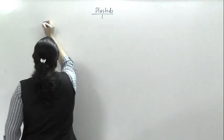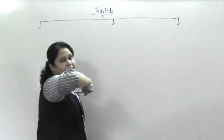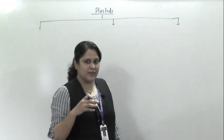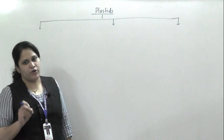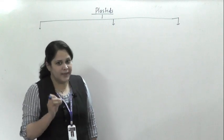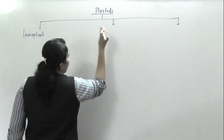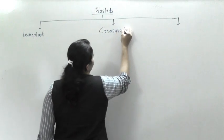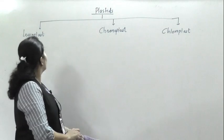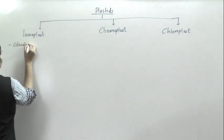Let's see the types of plastids in detail. There are three types: leucoplast, chromoplast, and chloroplast. Let's start discussing leucoplast first. These are colorless plastids. They are located in non-green parts of plants — you can say stem, then root. They are present in non-green parts of plants.